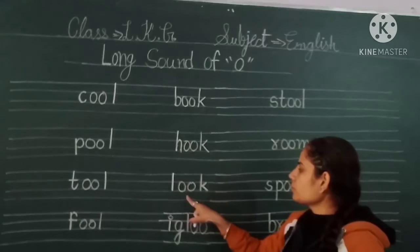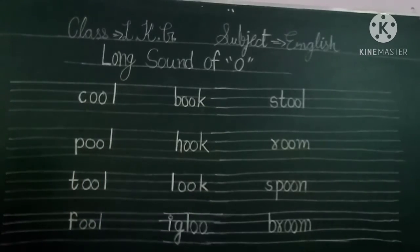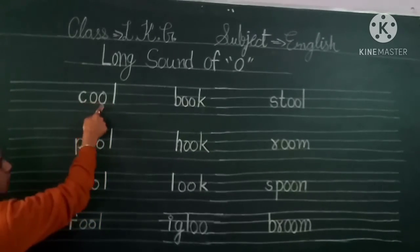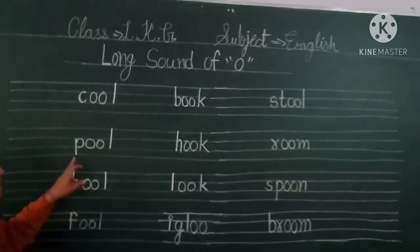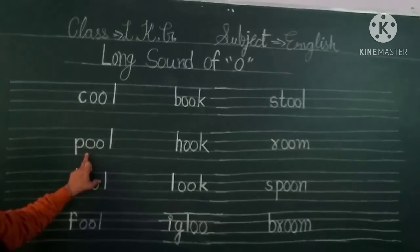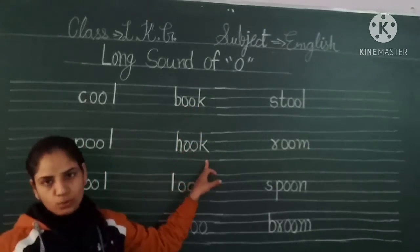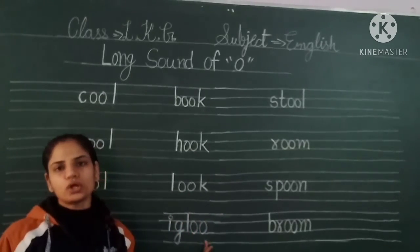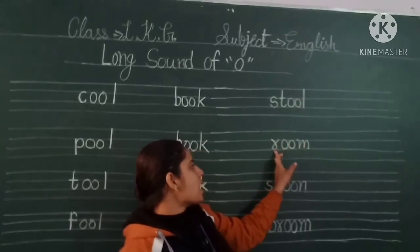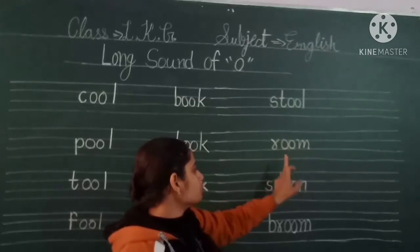Igloo. Book, Look, Igloo. Yes. Very good! Close your hands. Start now. C Double O — Cool. P Double O — Pool. F Double O — Fool. Book. L Double O — Look. I-G Double O — Igloo. Book, Igloo, Book, Broom, Spoon, Broom, Spoon, Broom.